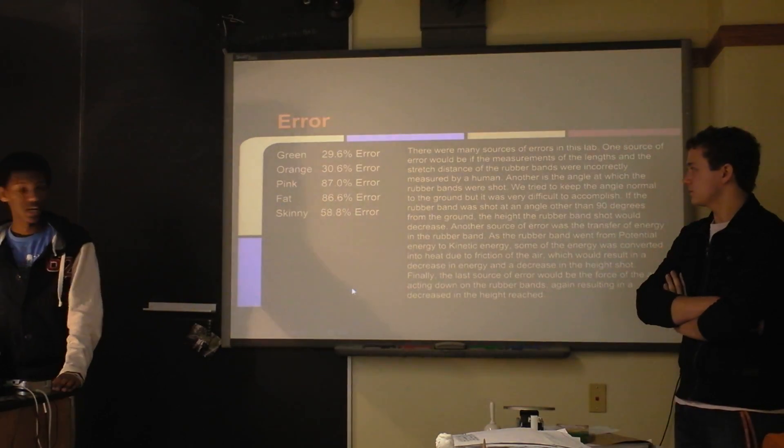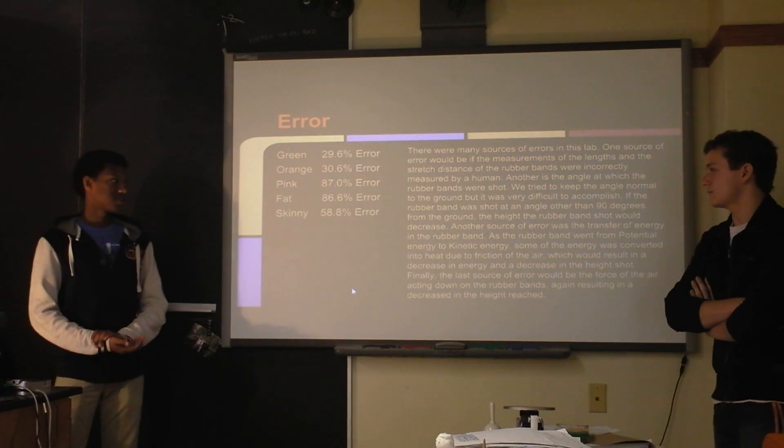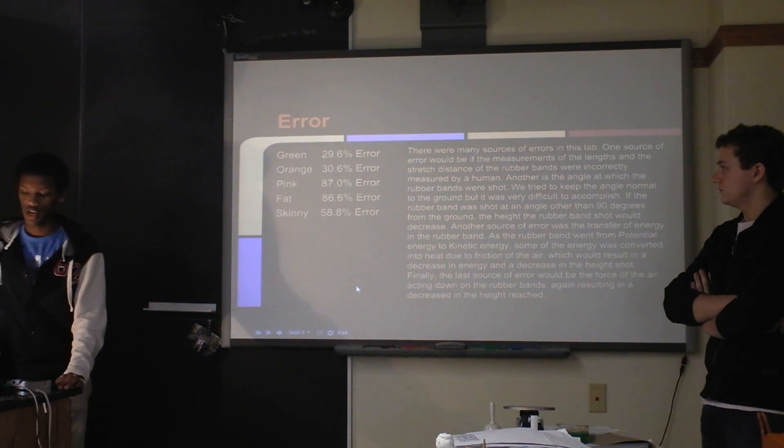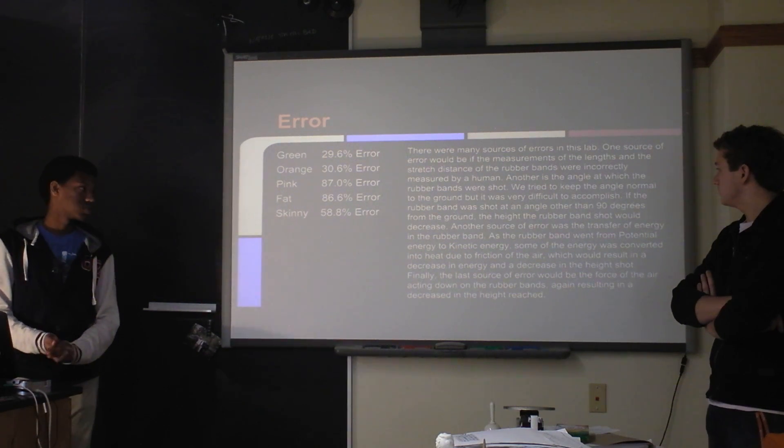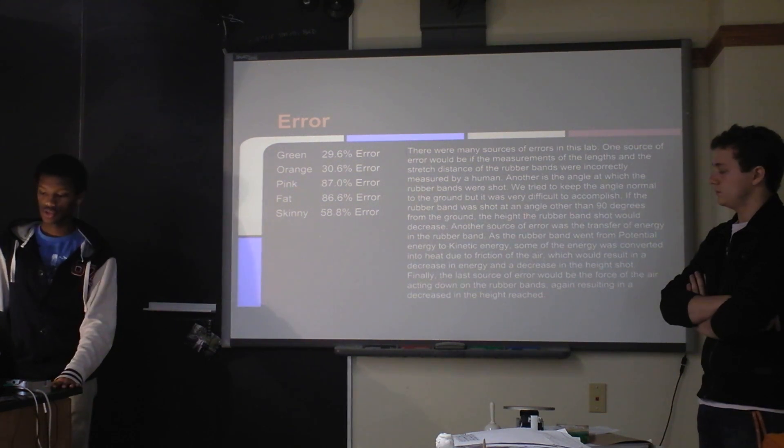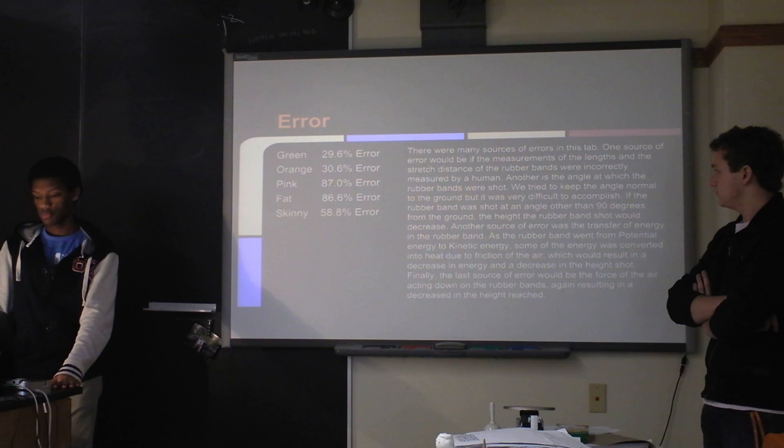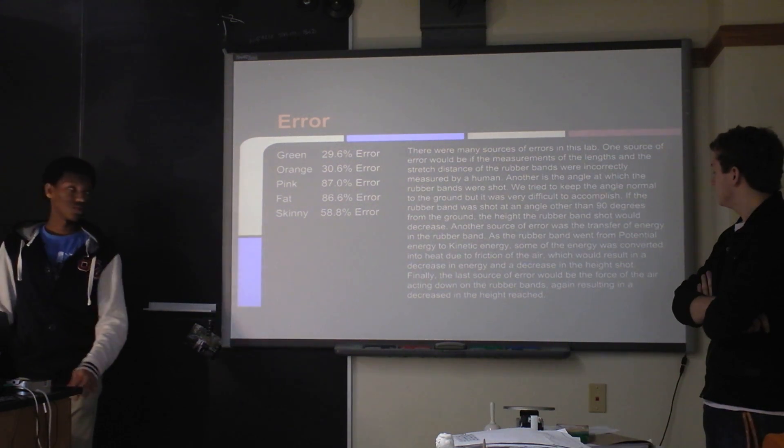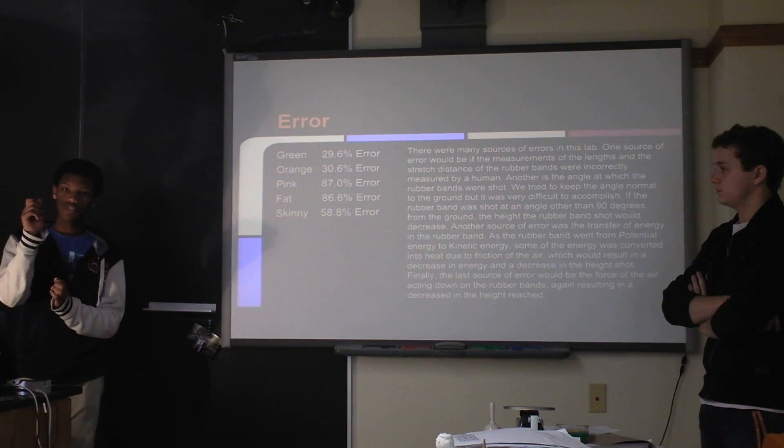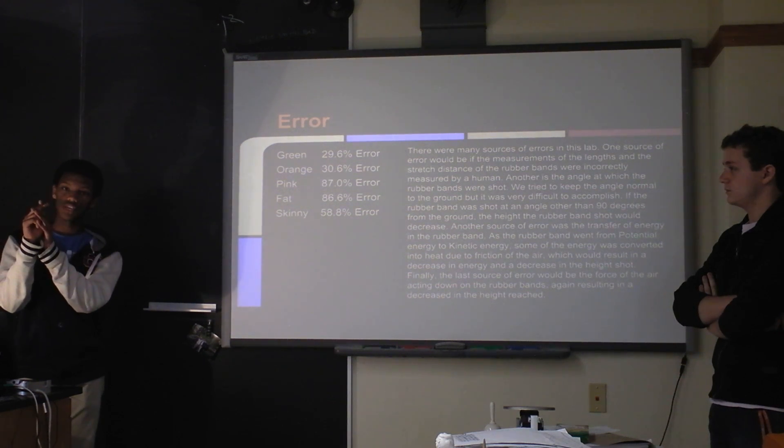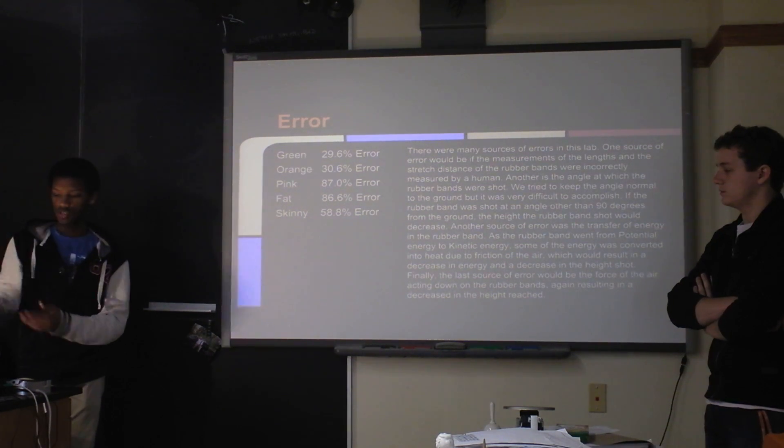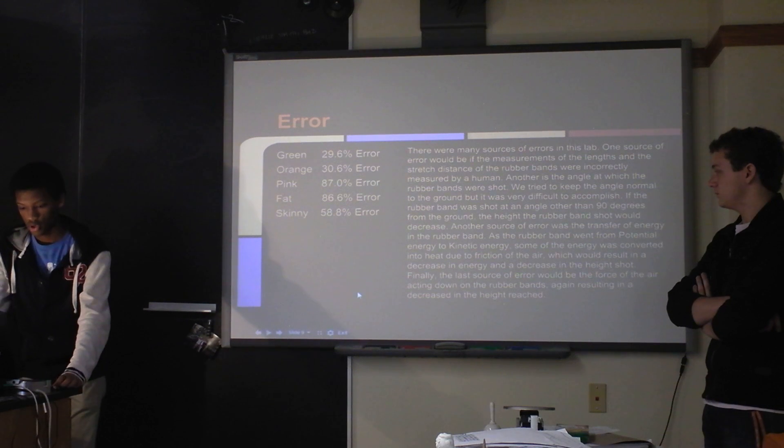So this was our error. We had a lot of error because there were a lot of sources. One was air resistance and air friction causing the rubber band to lose some of its energy into heat as it was traveling up, reducing its height. Another was our video analysis, because you can't perfectly get the rubber band straight up and down. It has to be moved off to the side so it stays on the rubber band. So the angle it was shot at wasn't perfectly straight, meaning there was a reduction in height again.